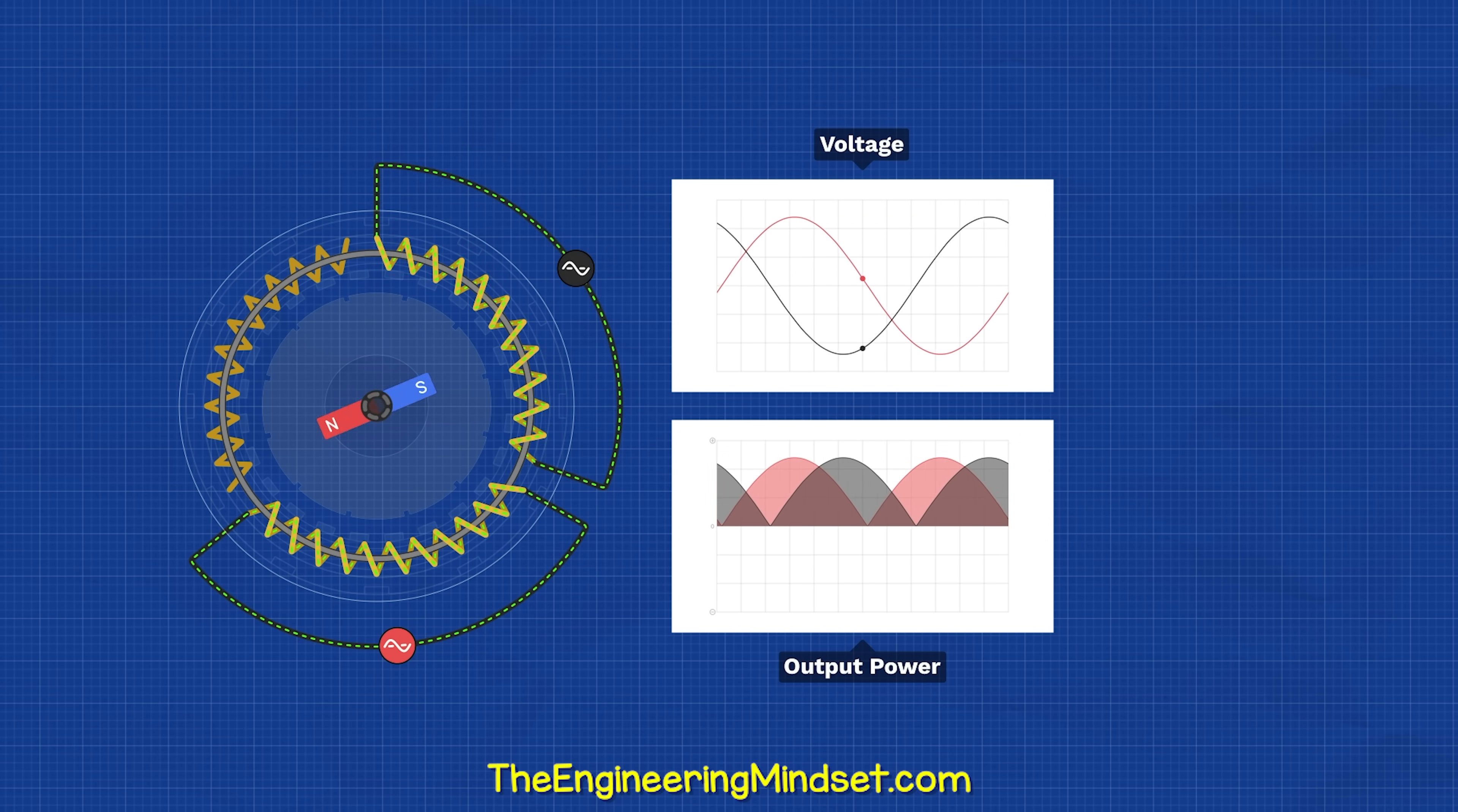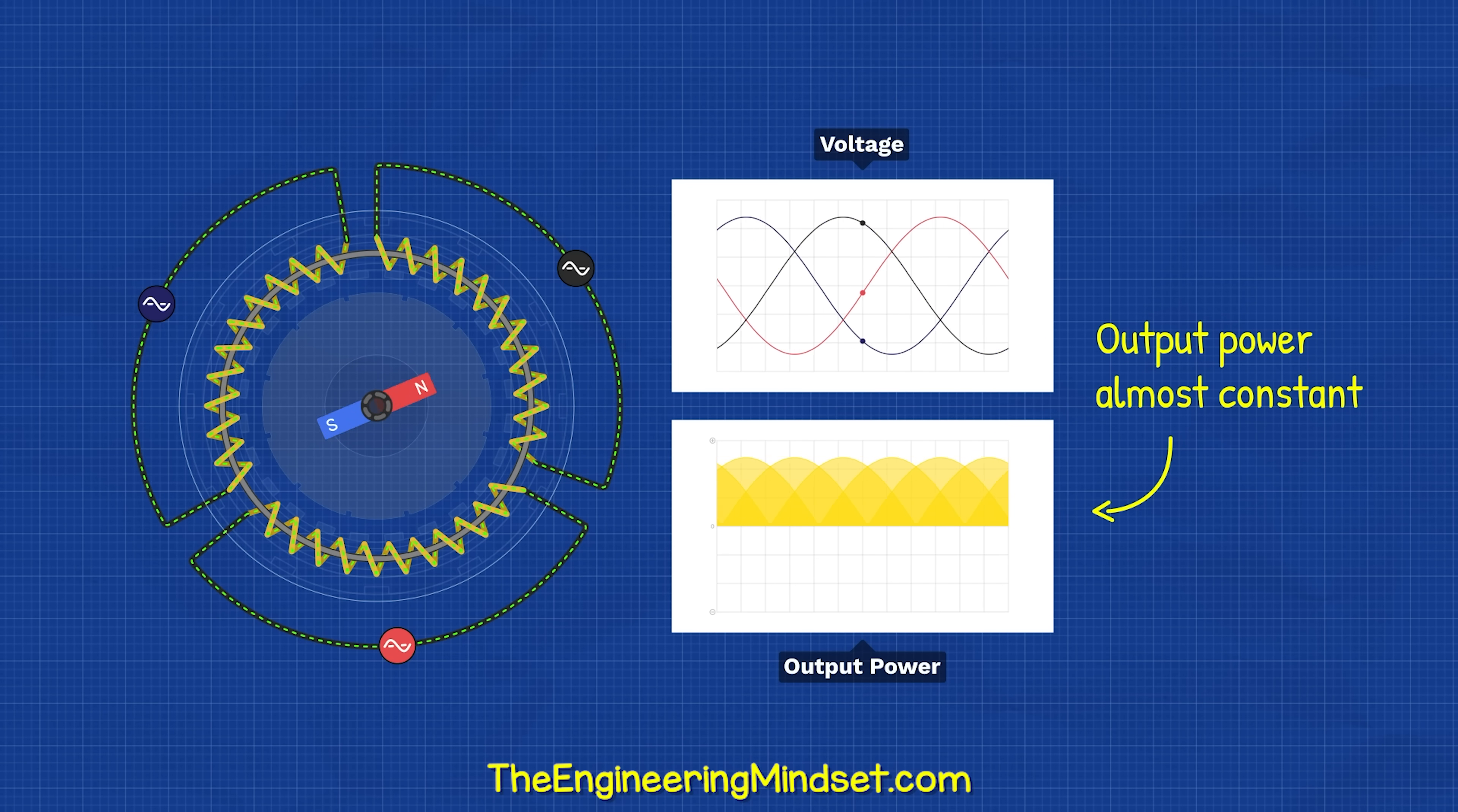We can add another separate coil, 120 degrees from the second coil, and this will also experience the changing magnetic field at a different time to the other coils. And this gives us three phases. We can see this gives us a much more constant output power.